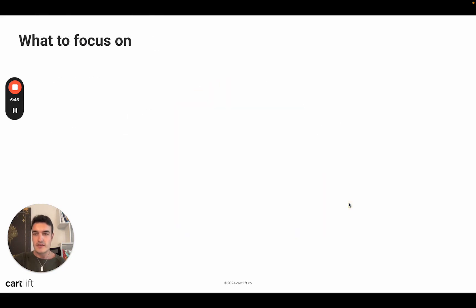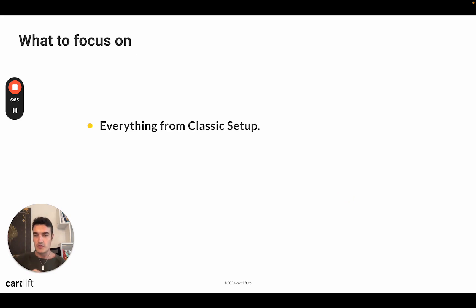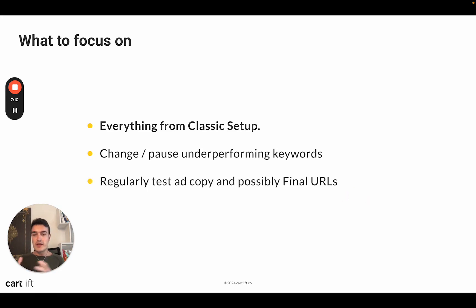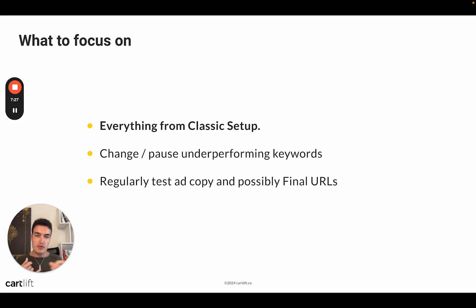What do you have to work on in the granular setup? Everything from the classic setup still applies — negative keywords, adjusting product CPC bids, and so on. But you also want to change or pause underperforming keywords. When you have around 20 keywords in your search campaign, you want to adjust, pause, or change bids accordingly. You may also want to regularly test ad copy and final URLs. Don't use 20 ad groups with two ads each — rather, have just one, two, or three ad groups in this campaign, and find the perfect final URL to send people to. Whether you send someone to product A, product B, the collection page, or the homepage has a huge effect on the conversion rate.